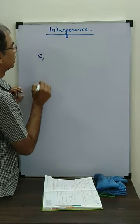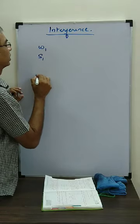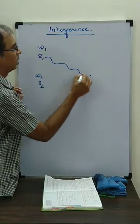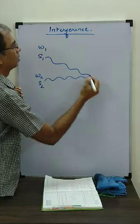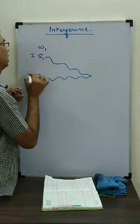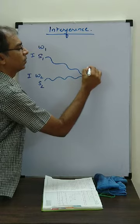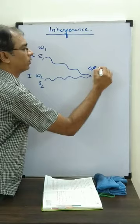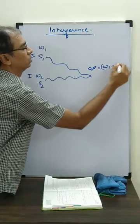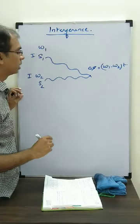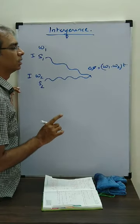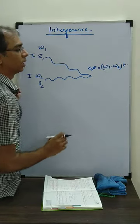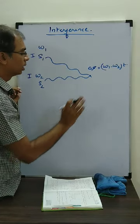Two sources again, S1 and S2, but their frequencies are different — they are not coherent sources. Suppose at this point the two waves are meeting. Let us assume their intensities are same, I and I. Now here phase difference is not constant; it keeps on changing because of the factor omega 1 minus omega 2 into T. As I told you in the last class, the phase normally we take as a function of path difference, but here this factor is also there because omega 1 and omega 2 are not equal.